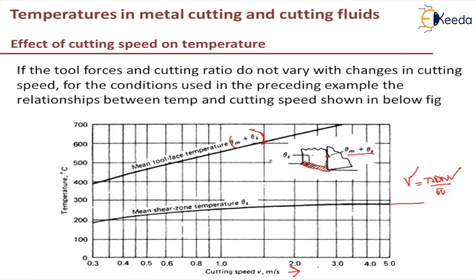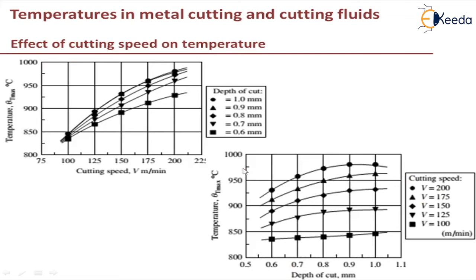So as the cutting speed increases, the mean tool face temperature goes on increasing. This is because of friction. Next, we will look at the two graphs, where the work material used is AISI 1045 steel.